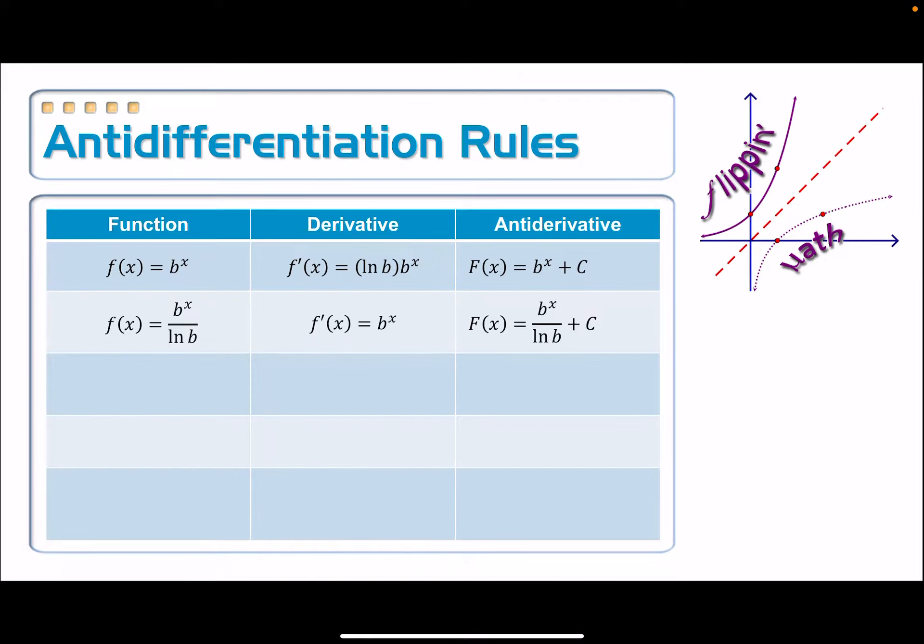All right, let's continue with these antidifferentiation rules here. So next up we have f of x being equal to the natural log of the absolute value of x.